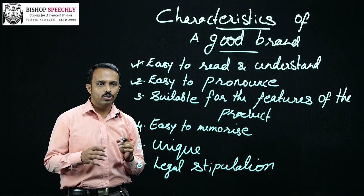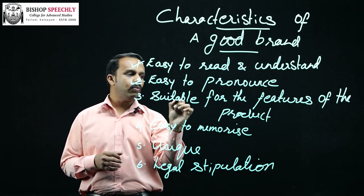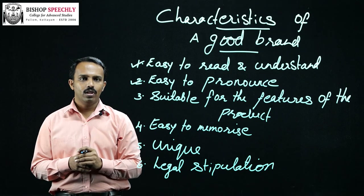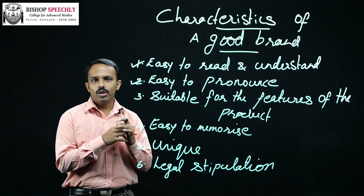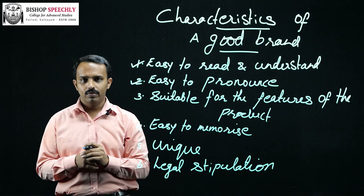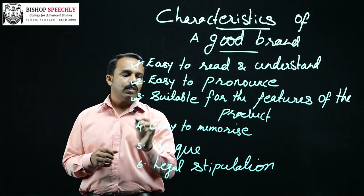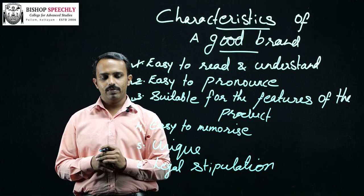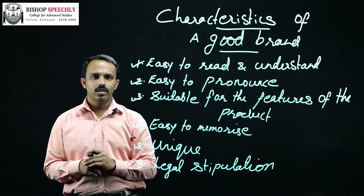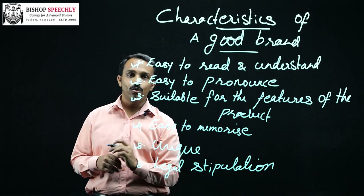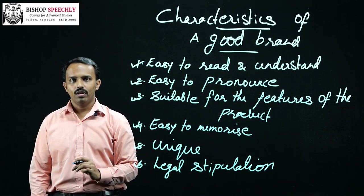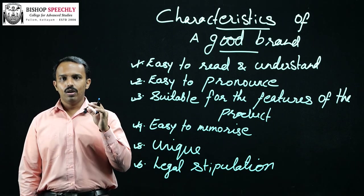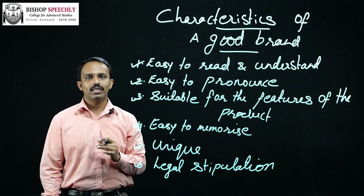The third factor is that the brand name should be suitable for the features of the product — for example, the brand name Medimix is suitable for the characteristics of that particular product. The fourth factor is that it should be easy to memorize. The fifth characteristic is uniqueness. The last one is legal stipulation — when fixing a brand name, the firm must consider the rules, regulations, and legal restrictions established by the nation.